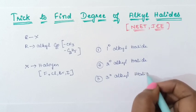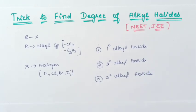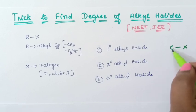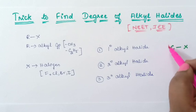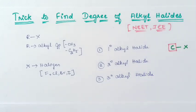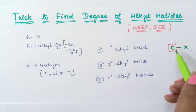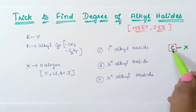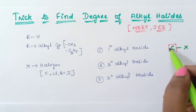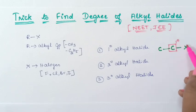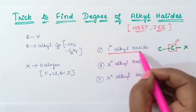So what is primary, secondary, and tertiary alkyl halide? Primary alkyl halide means if the halogen is connected to a carbon, you should check what kind of carbon it is. In the last video I taught you how to find whether a carbon is primary, secondary, or tertiary. A carbon is primary if it is connected to only one other carbon atom. So if the halogen is connected to a primary carbon, it is called a primary alkyl halide.